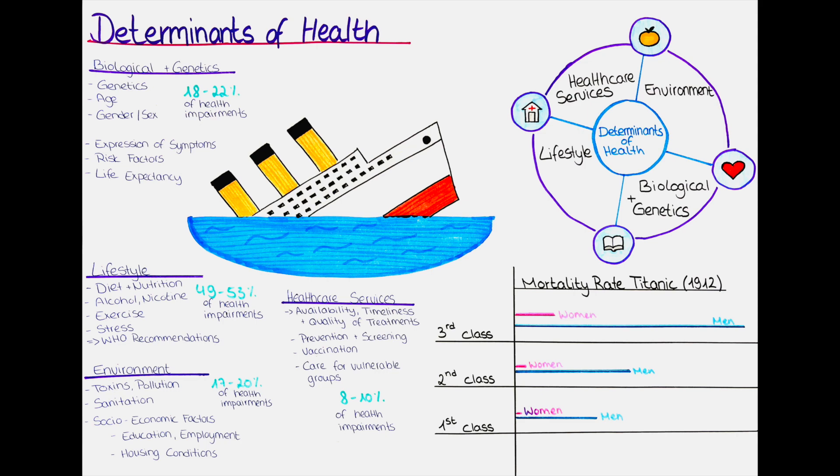What is a determinant of health? Health and disease are influenced by a multitude of factors that are known as determinants of health. These determinants can be classified into four main categories: the biological and genetic factors, the lifestyle factors, the environmental factors, and the healthcare services.